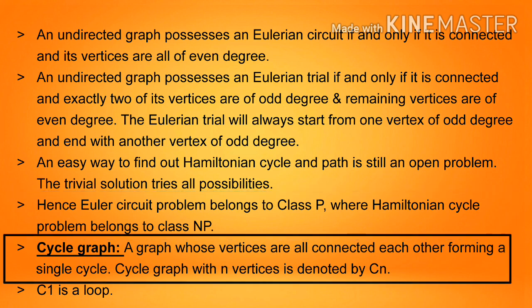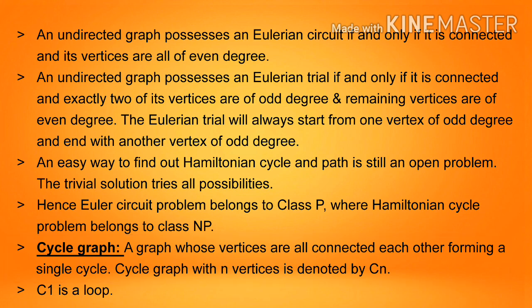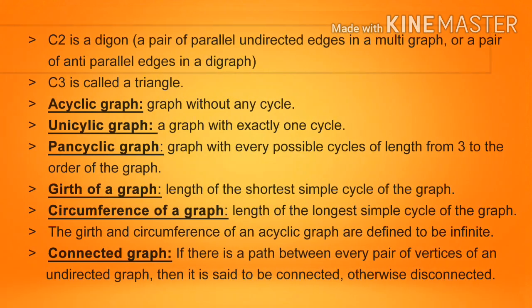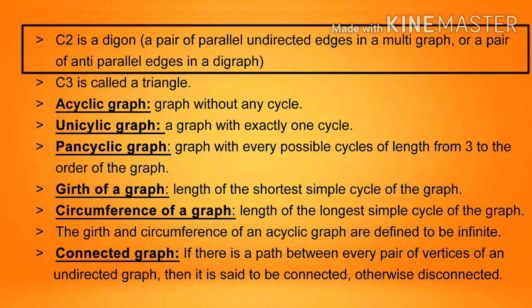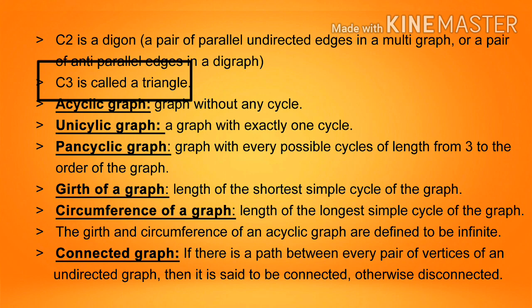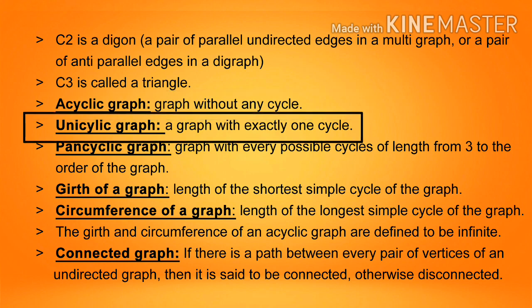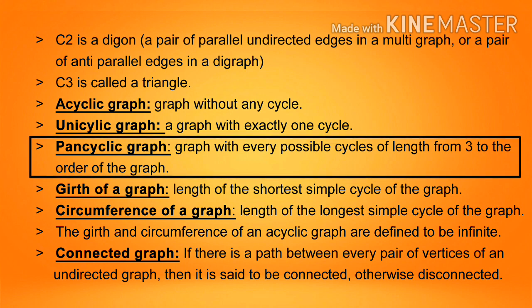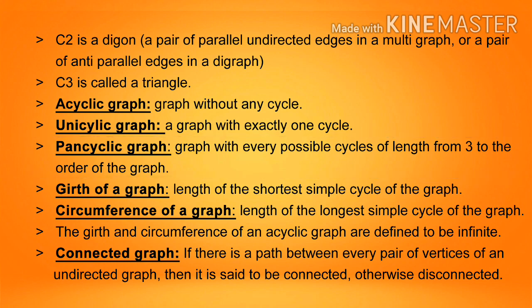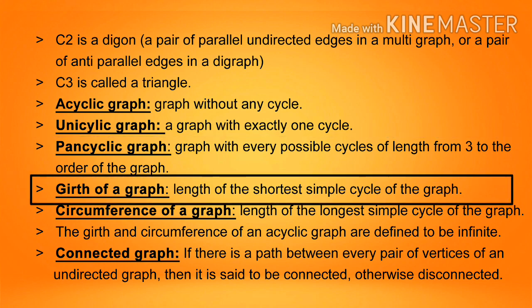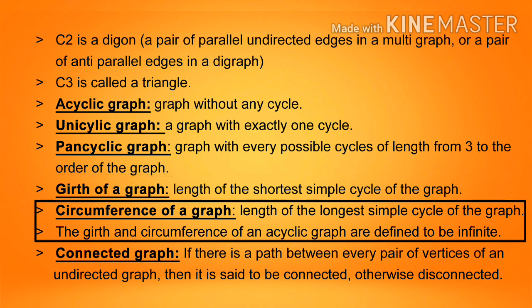Cycle graph: a graph whose vertices are all connected forming a single cycle, denoted CN for N vertices. C1 is a loop; C2 is a digon — a pair of parallel undirected edges in a multigraph or anti-parallel edges in a digraph; C3 is called a triangle. A cyclic graph has at least one cycle; a graph without any cycle is known as an acyclic graph. A unicyclic graph has exactly one cycle. A pancyclic graph has every possible cycle of length from 3 to the order of the graph. The girth is the length of the shortest simple cycle; the circumference is the length of the longest simple cycle. For an acyclic graph, both are defined to be infinite.